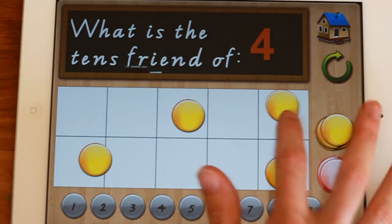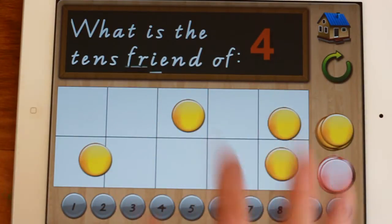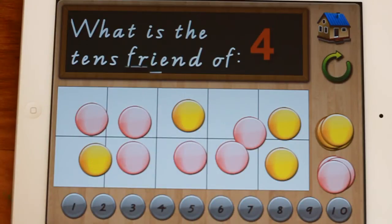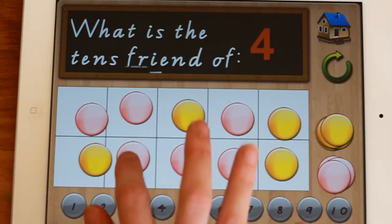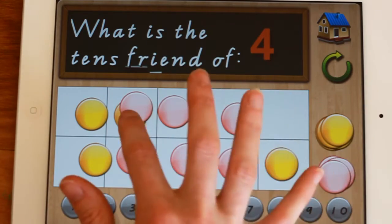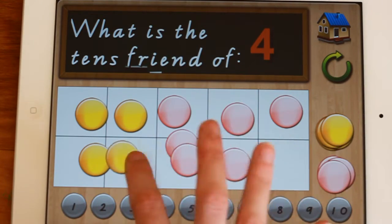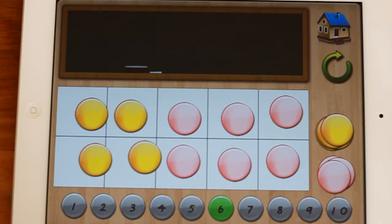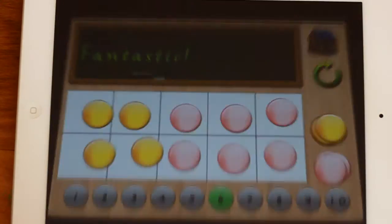And of course, the teaching point is that, yep, okay, we've got four. What's the tens friend? That's not a very good way to arrange it. What would be a better way of arranging it? There you go. So the answer is six. Back to home.